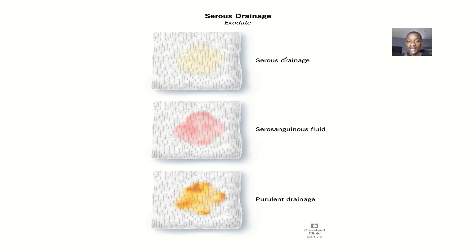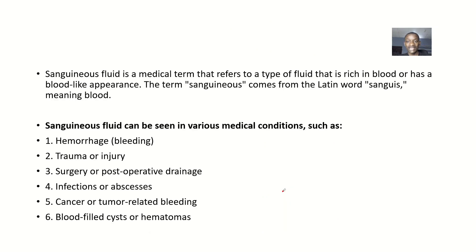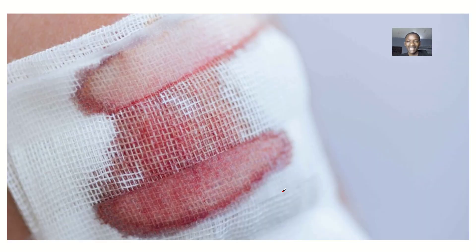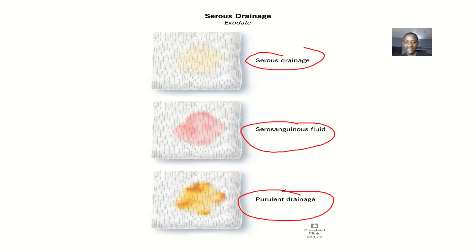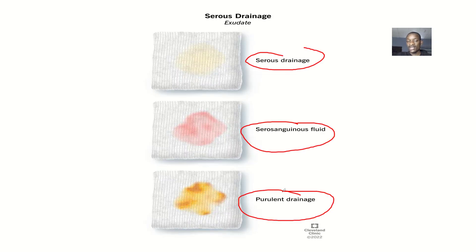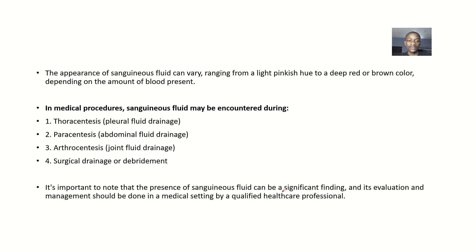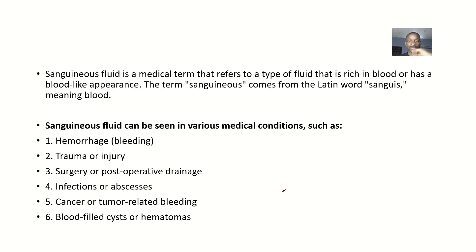So looking at sanguinous fluid — these are like bandages covering some fluid. Now look at this: this is a serous drainage. This is what we call a serosanguinous fluid. This is what we call a purulent drainage. And this is basically sanguinous fluid itself. Looking at this type called serosanguinous fluid — that means it's kind of mixed up with serous drainage. So let's define it and talk about examples of medical conditions where you can find sanguinous fluid, and the types of procedures where you might find this fluid.